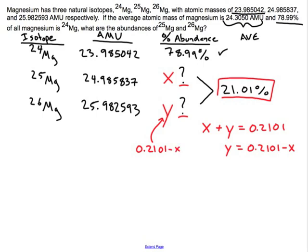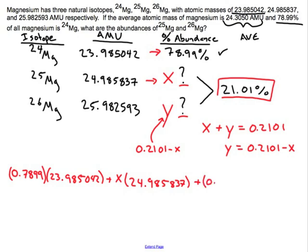So when doing my weighted average it's a little bit lengthy but we write it out like this. So it's 0.7899, that's this number right here. There's my fraction of the isotopes that are 23.985042. Plus x this guy at this particular weight, 24.985837. Plus the y variable which I'm going to choose to write it like this, 0.2101 minus x, multiplied by that isotope's atomic mass, 25.982593. And all of this will be equal to the average which was written up there given in the problem: 24.3050.